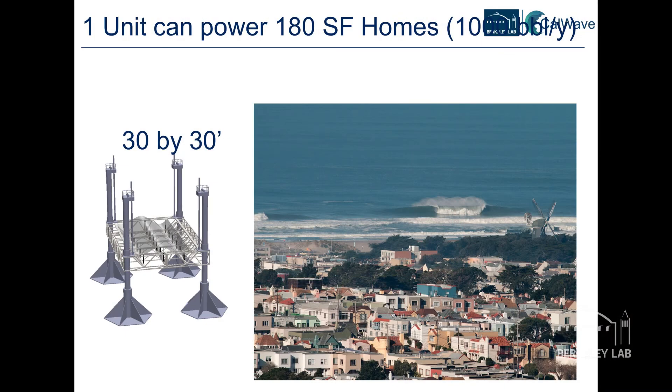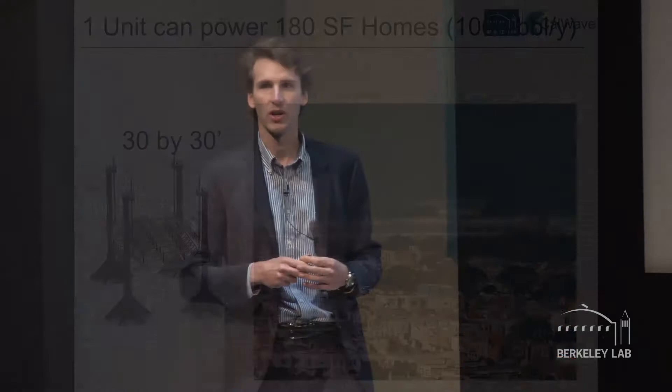Let's imagine we upscale one of our units to a 30 by 30 foot unit, and place it somewhere south of Ocean Beach where it's not an area of recreational use. One single unit of our system would be able to power 180 homes in San Francisco. This is equivalent to about a thousand barrels of oil per year.